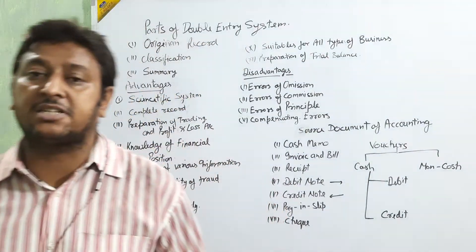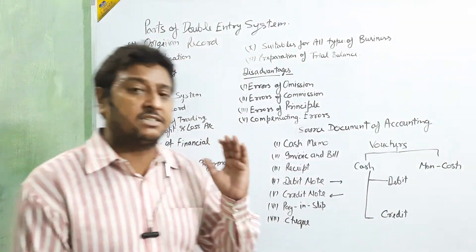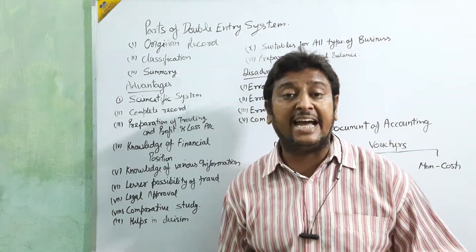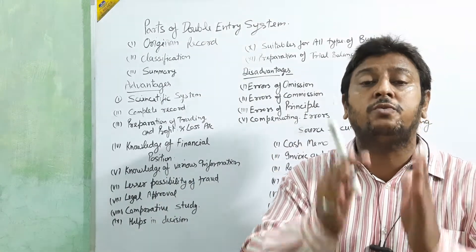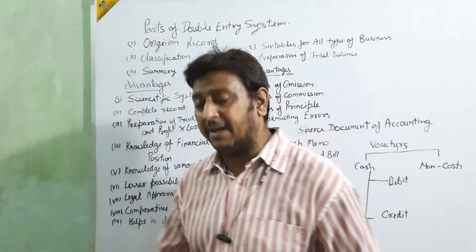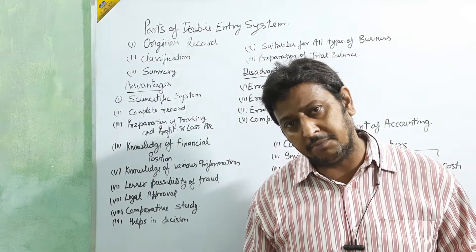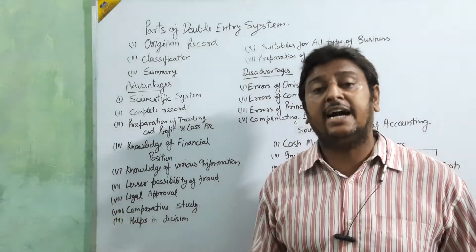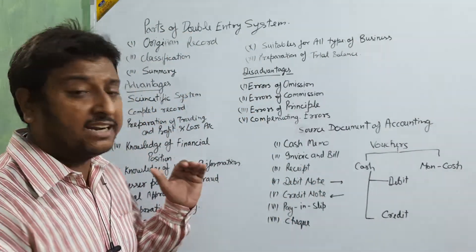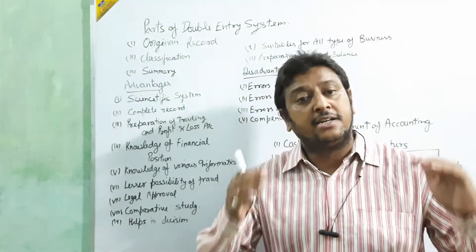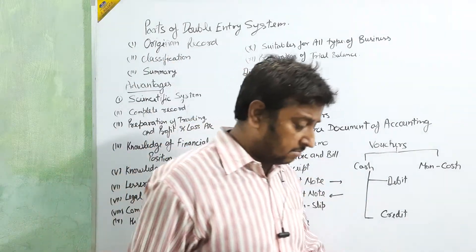Next is legal approval. After making all accounting records in the double entry system, the records are checked and certified by a Chartered Accountant. After that, you can use this accounting as legal proof in court. If any case or problem arises, this record can be used as evidence.